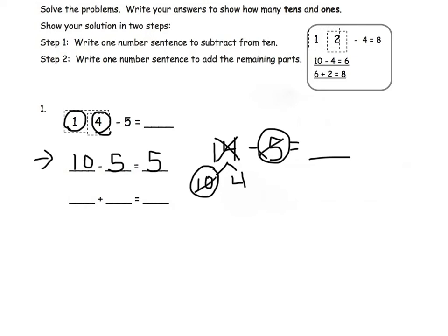We are now done with those numbers and we are going to take our answer of 5 and add it to the remaining ones which is 4. 5 plus 4 equals 9. So 14 minus 5 equals 9.